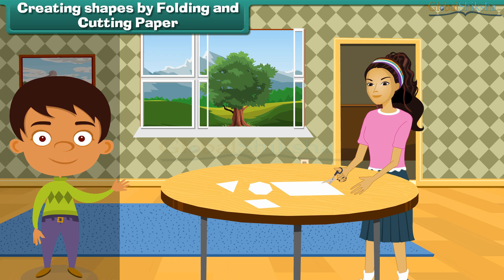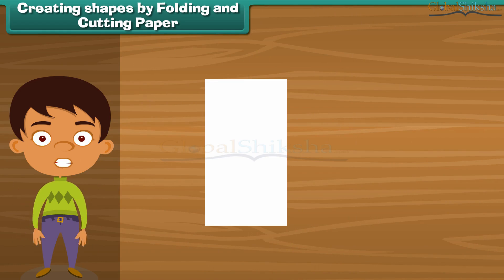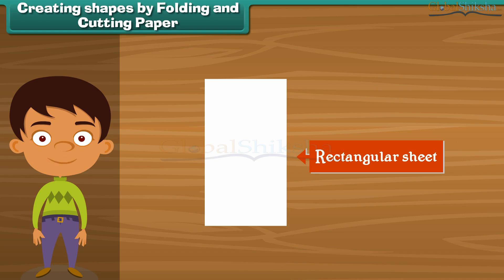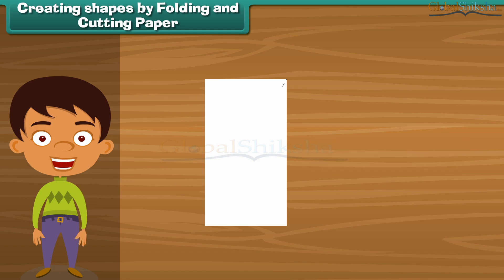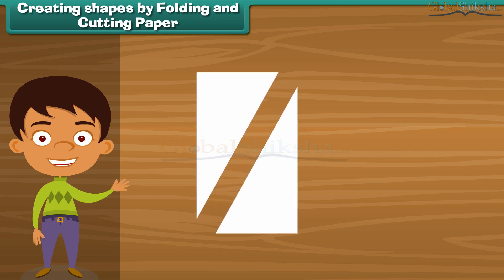Anu is busy cutting paper in different shapes. She takes a rectangular sheet of paper and tries to make a triangle. Draw a dotted line on the sheet and cut along it — now what you see is a triangle.